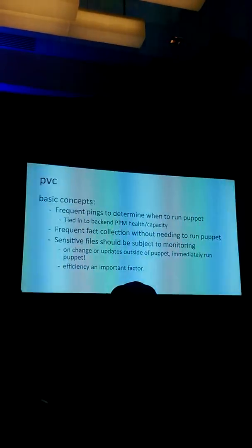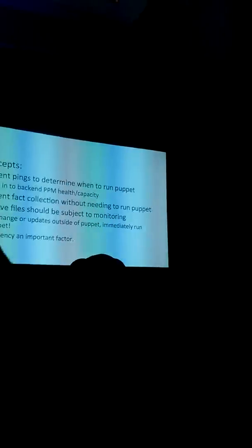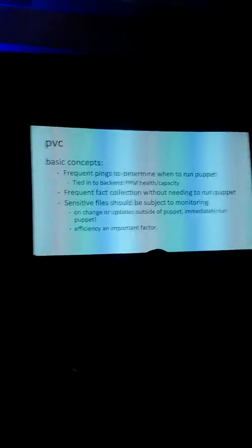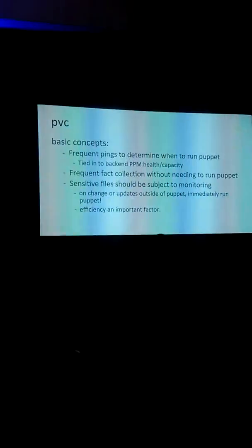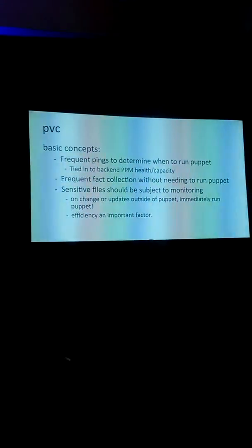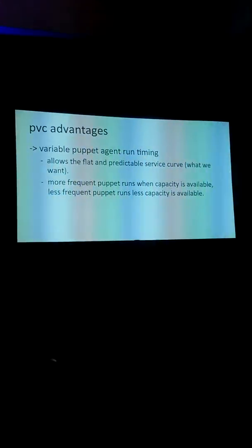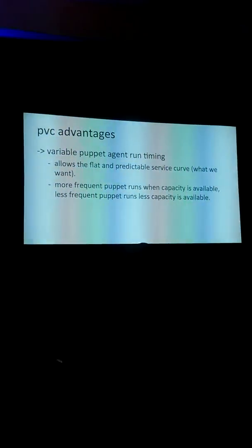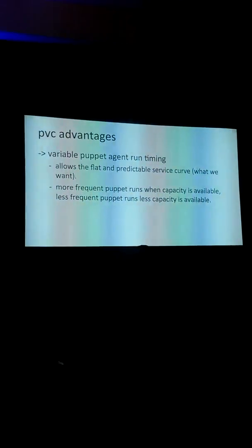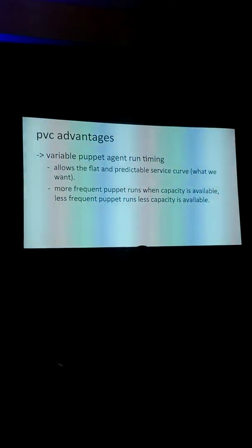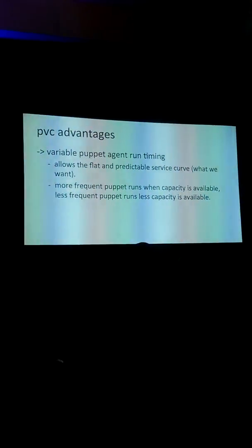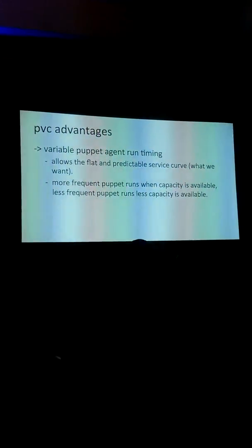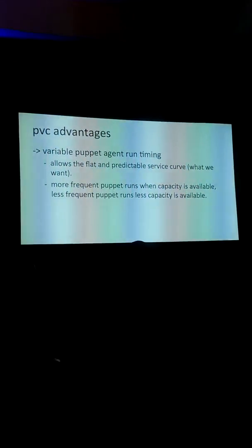There's an event loop that it waits for before the next check. In that event loop, it's not just doing a sleep — it's checking for changes to those cold files. Variable agent timing: adding variability to the puppet agent run timings is how you get that flat curve on the puppet infrastructure.